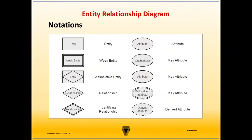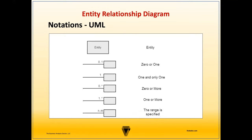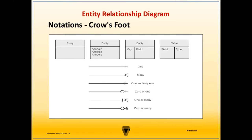The entity relationship diagram can be illustrated with a number of notation styles. The best notation depends on the preference of the creator or whatever documentation standards are set by the organization or team. Some of the most common notations include the Chen notation, UML, and crow's foot. Since crow's foot is widely used and tends to be more intuitive, I'll be using this notation throughout the remainder of the lesson.